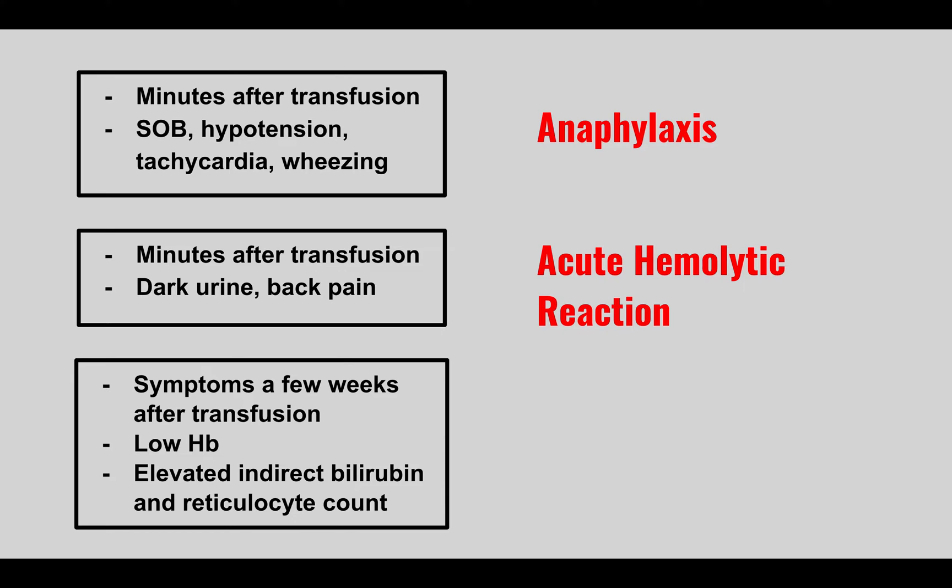The next one presents symptoms a few weeks after transfusion: low hemoglobin, elevated indirect bilirubin, and elevated reticulocyte count. This is delayed hemolytic reaction. In any hemolytic reaction, watch for elevated indirect (unconjugated) bilirubin, high LDH, low haptoglobin, and high reticulocyte count, because the bone marrow is trying to replace the lost cells.